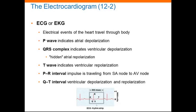The electrical events occurring in the heart are powerful enough to be detected by electrodes placed on the body surface. A recording of these events is an electrocardiogram, or ECG. These ECGs can be used to diagnose cardiac arrhythmias or abnormal cardiac activity.